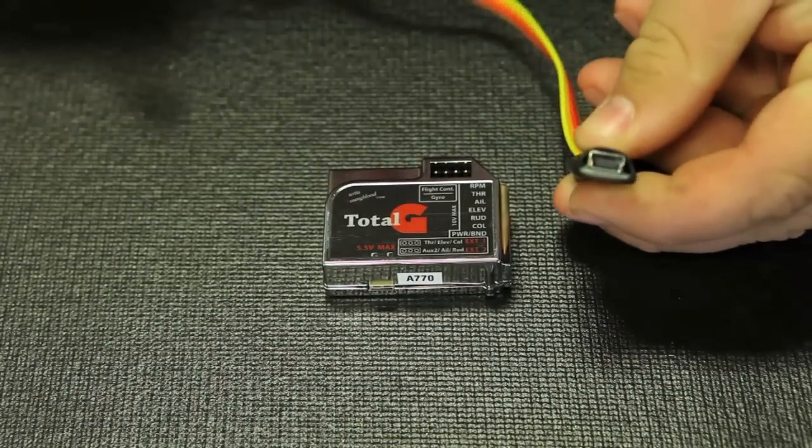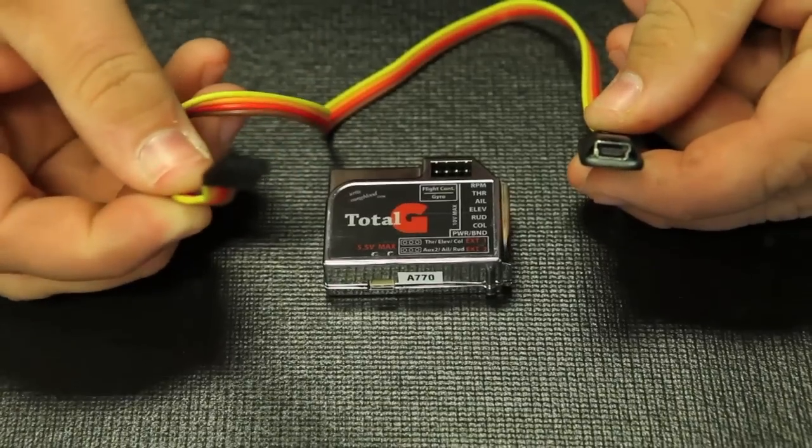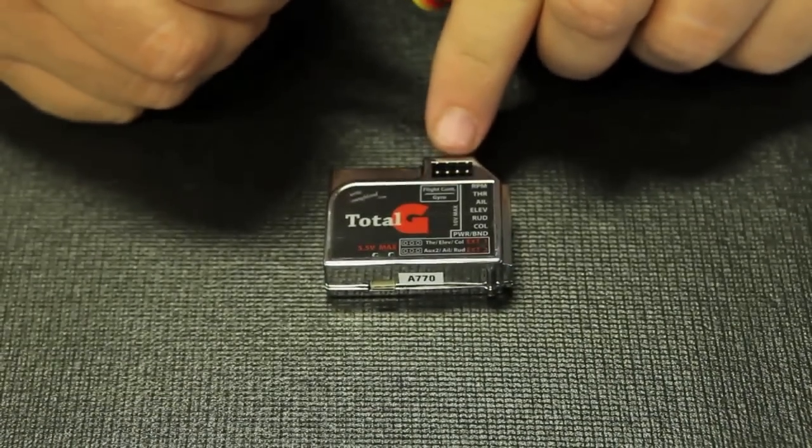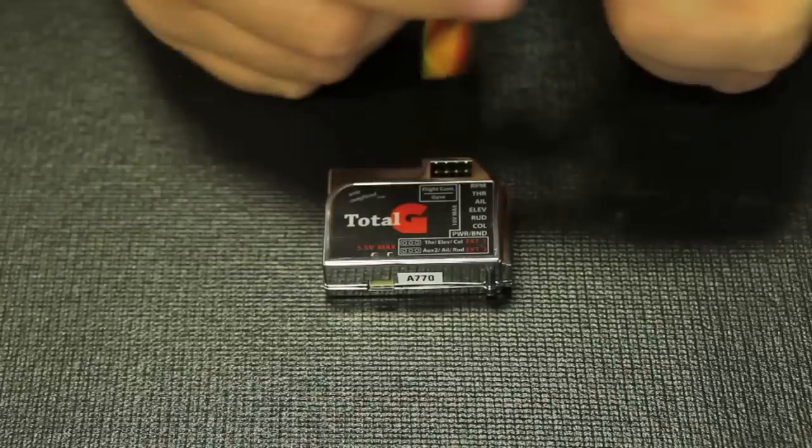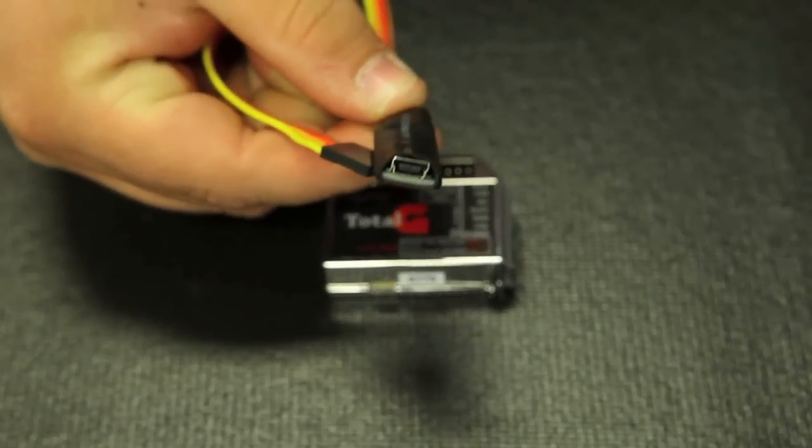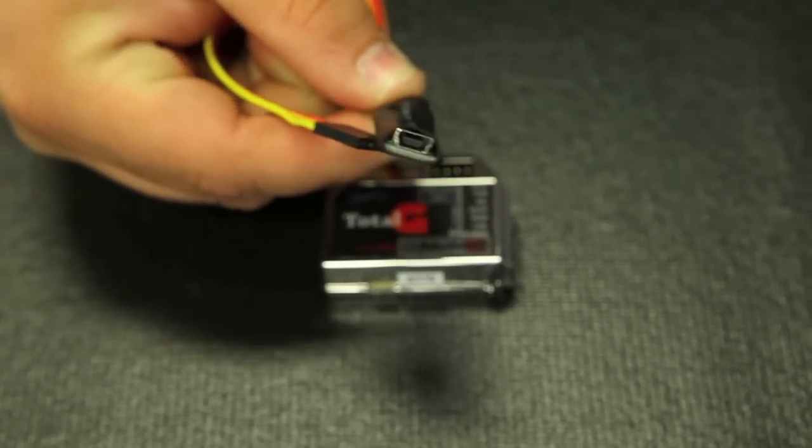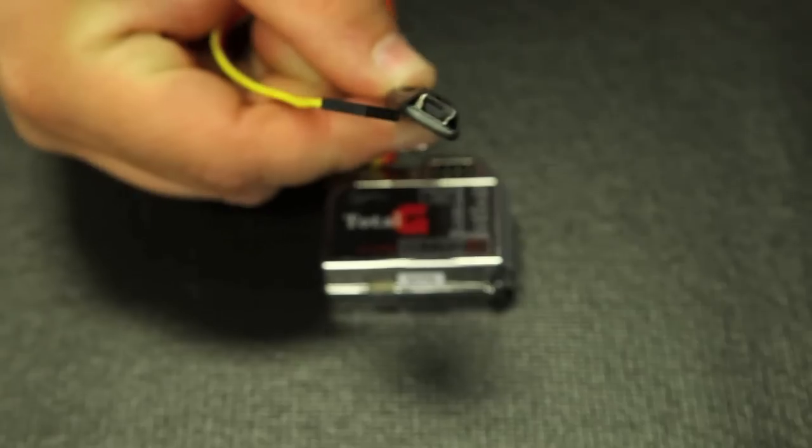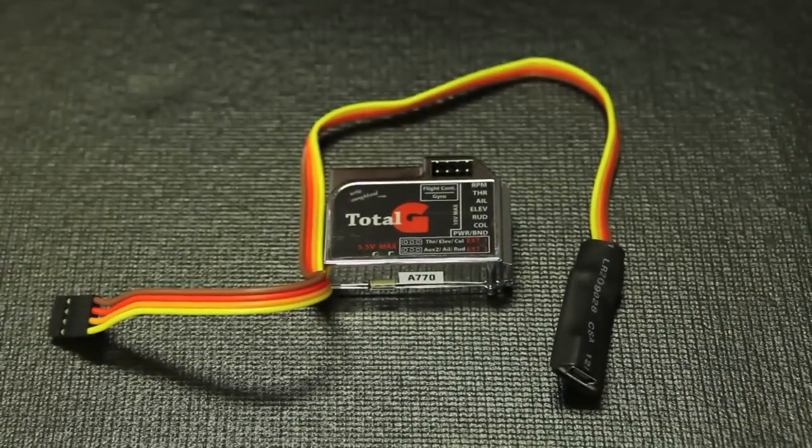Here's your Total-G interfacing cable. This is a four-pin type plug that plugs right into your flight control system or the gyro governor port. It does have a mini USB receptacle. You simply plug your USB cable into your computer and then the other end right in here to access the setup of the Total-G flight control system.